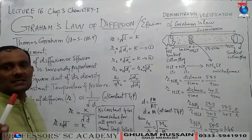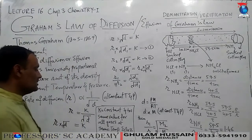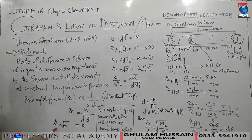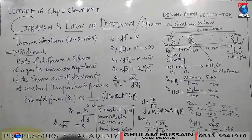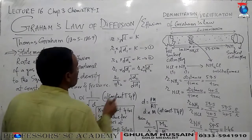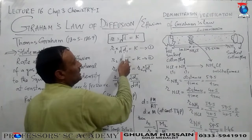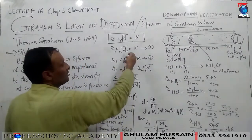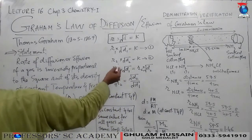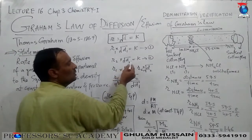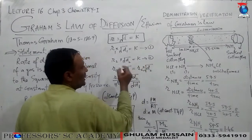This relationship holds at constant temperature and pressure. The proportionality constant K has the same value for all gases if all gases are present at the same temperature and pressure. So if we bring the square root of density from the right side to the left, it multiplies with rate of diffusion: rate of diffusion × √density = K (equation 1). Similarly, rate of diffusion of gas 2 × √(density of gas 2) = K (equation 2).